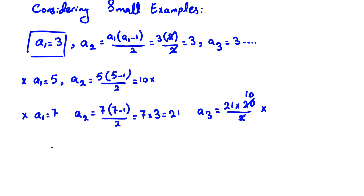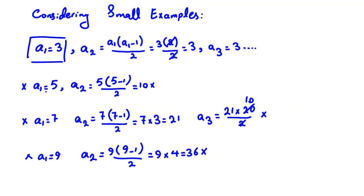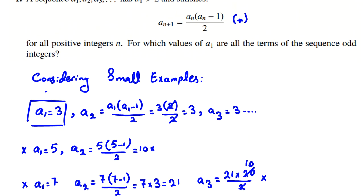Let's check a1 equal to 9. Again, a2 is 9 times (9 minus 1) over 2, which is 9 times 8 over 2, equal to 36. It's even, it's bad. So by considering a1 equal to 3, 5, 7, and 9, we guess that probably only a1 equal to 3 is good.